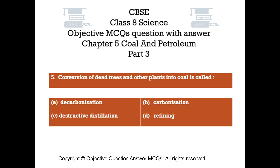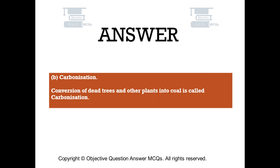Question number 5. Conversion of dead trees and other plants into coal is called: Option A: Decarbonization. Option B: Carbonization. Option C: Destructive distillation. Option D: Refining. The right answer is Option B, Carbonization. Conversion of dead trees and other plants into coal is called carbonization.